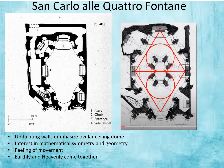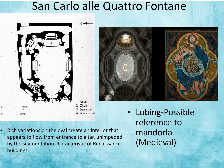There is a feeling of movement and a sense of earthly and heavenly coming together. The space has a sense of order that human beings understand, but also a sense of movement and otherworldly feeling. The rich variations on the oval create an interior that appears to flow from entrance to altar, unimpeded by the segmentation characteristic of Renaissance buildings. Architects refer to this lobed quality as 'lobing,' and historians have made a connection between this concept of lobing and the mandorla—a medieval shape used as a framing for religious imagery in the medieval period.